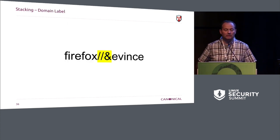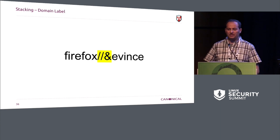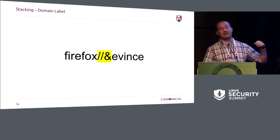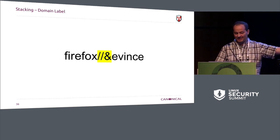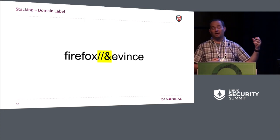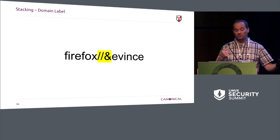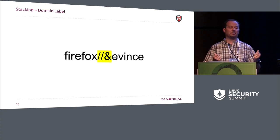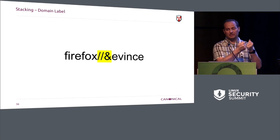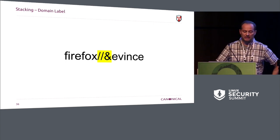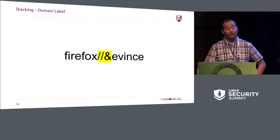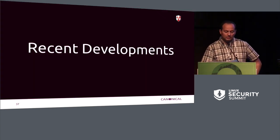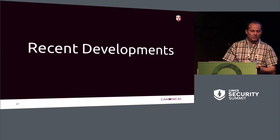Back to the domain label — you start seeing weird things like this. Maybe I have some intersection that doesn't make any sense at all, but it doesn't matter. We have a profile Firefox and a profile events. Normally those could be the domain label, but when we start talking stacking, you get them together and that's the actual domain name, domain label, or type. So that's the basics of AppArmor policy.